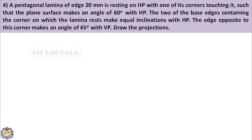A pentagonal lamina of edge 20mm is resting on HP with one of its corners touching it, such that the plane surface makes an angle of 60 degrees with HP. The two base edges containing the corner on which the lamina rests make equal inclinations with HP. The edge opposite to this corner makes an angle of 45 degrees with VP. It is given that the pentagonal lamina is kept inclined to both the planes. As it is fourth position, we have to draw the projections in three stages.